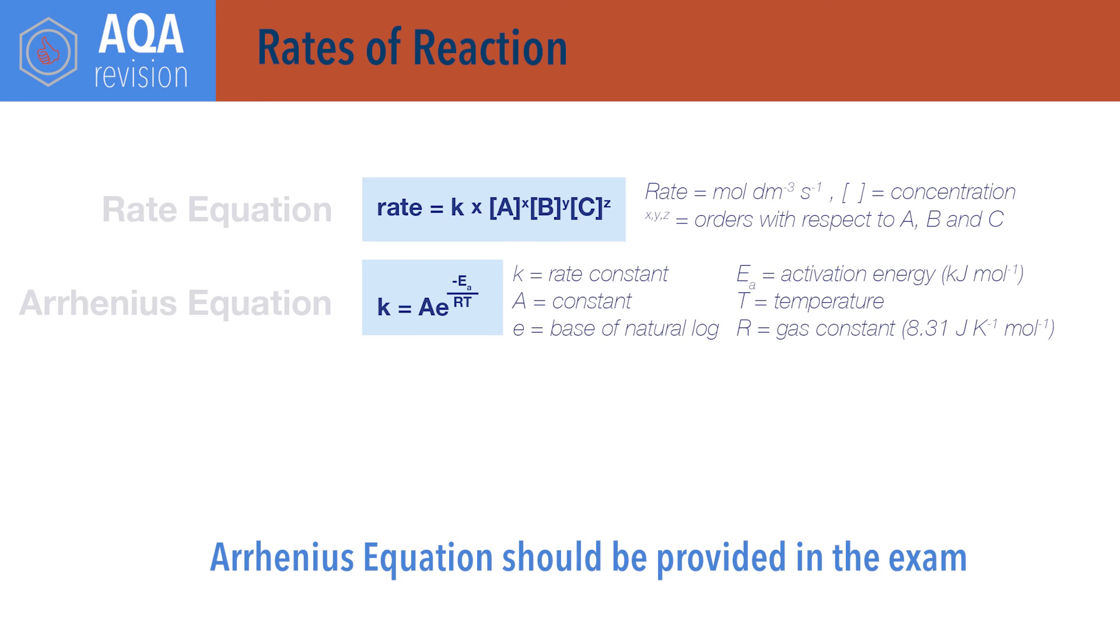Ea is activation energy with units of kilojoules per mole. R is the universal gas constant, 8.31 joules per Kelvin per mole, and T is temperature in Kelvin. The Arrhenius equation can also be given in the form ln K equals minus Ea over RT plus ln A, where ln is natural logarithm.